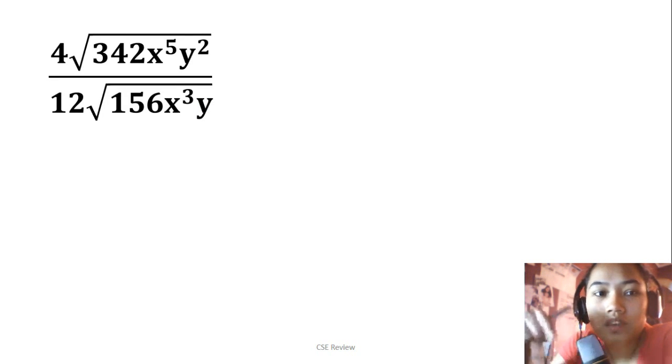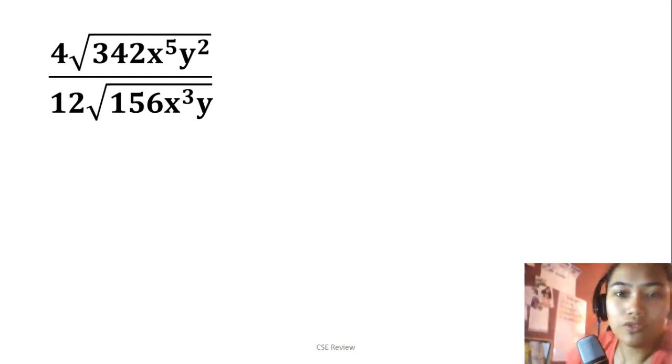The problem is 4 times the square root of 342x to the 5th y squared over 12 times the square root of 156x cubed y. The first thing we'll do is remove everything that can be removed or cancelled.